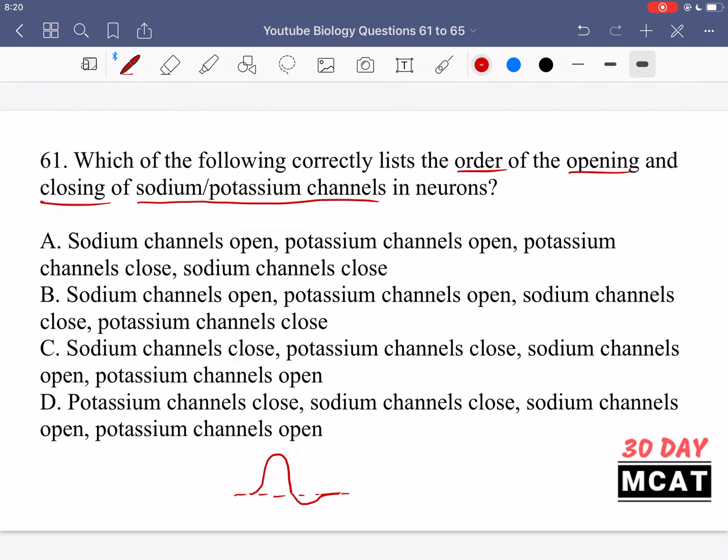So what happens is sodium channels open, then potassium, then sodium channels close, and then potassium. So B is the correct answer. Sodium opens, potassium opens, sodium close and then potassium close. The rest are incorrect.